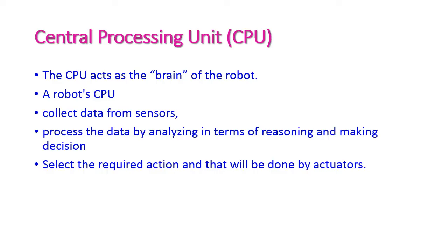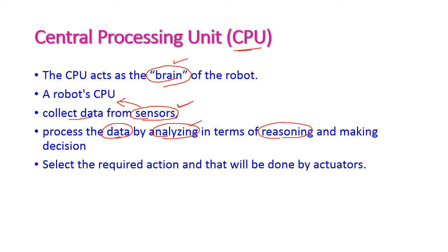The next very important component is the CPU, which acts as the brain of the robot. The CPU collects data from sensors, processes and analyzes it through reasoning, and uses machine learning algorithms to make decisions. Based on those decisions, the CPU selects the required action suitable for the current situation, and that action is carried out by the activators. Hence the CPU plays a very important role in robotics.